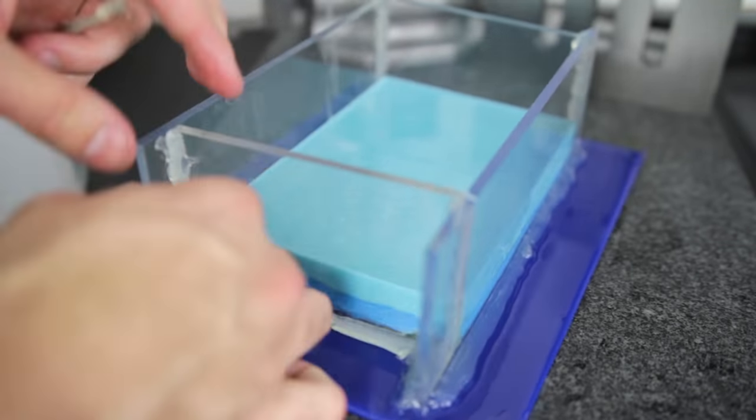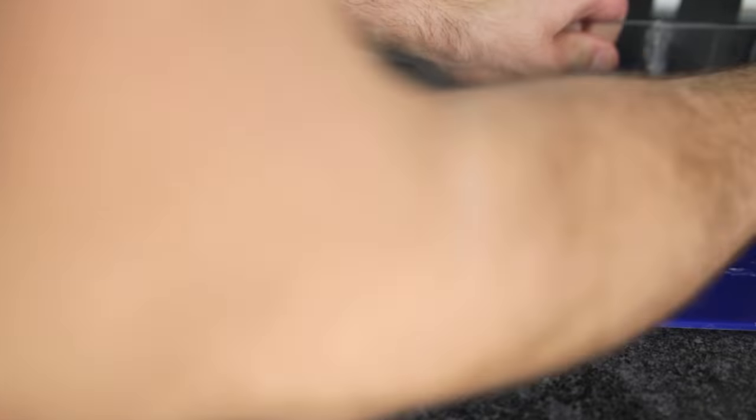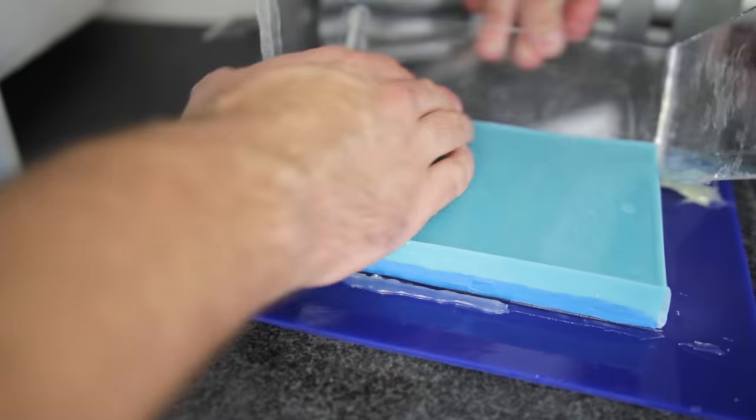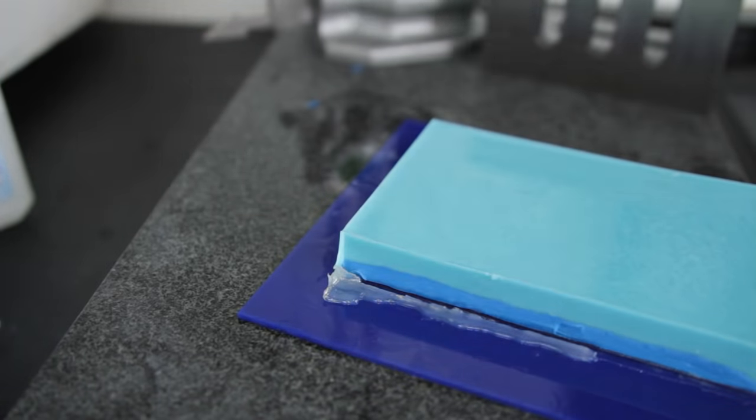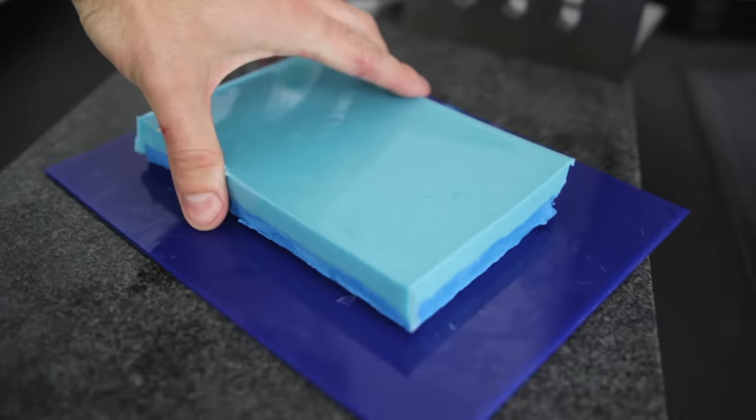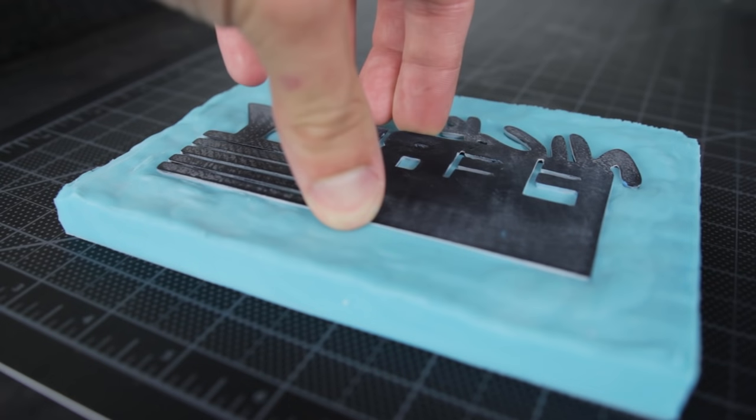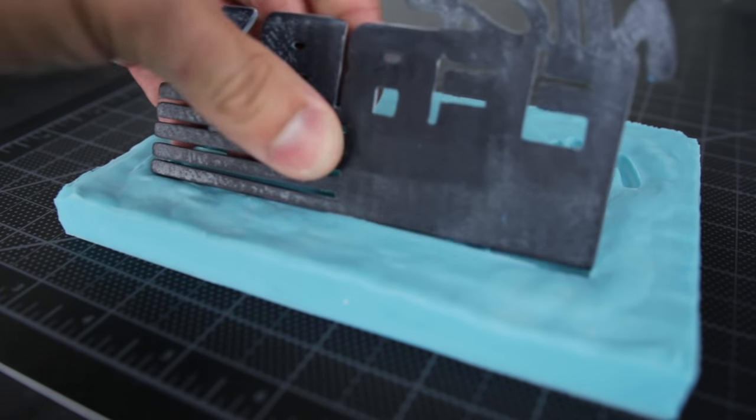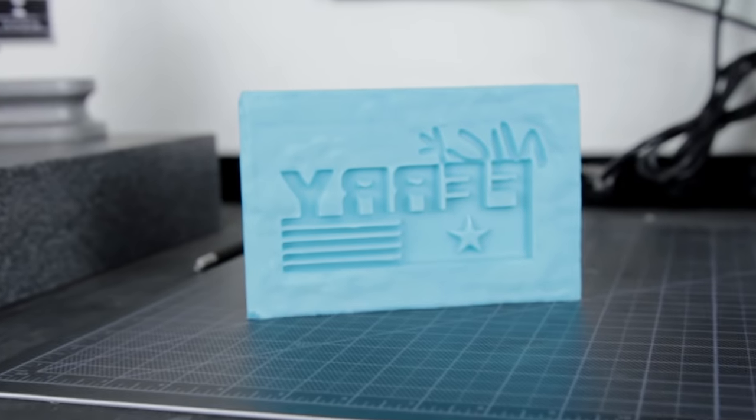Once done, I remove the acrylic sides. I then pull the 3D print out of the mold. And the mold is complete.